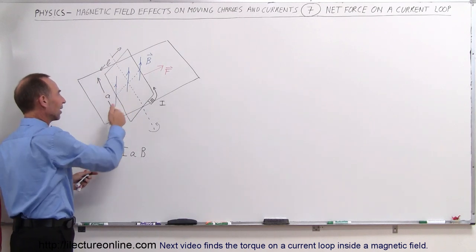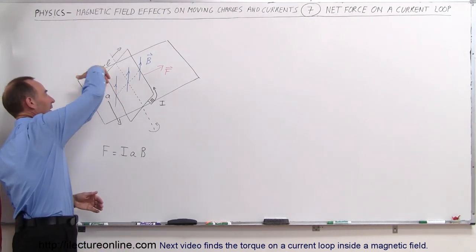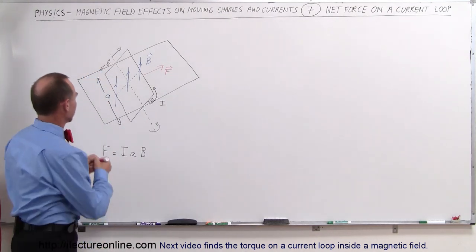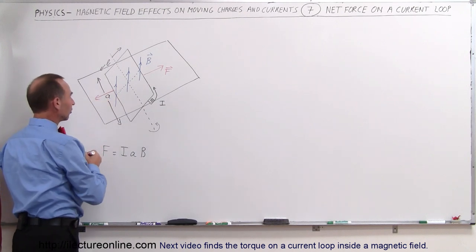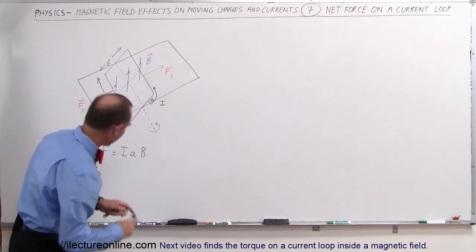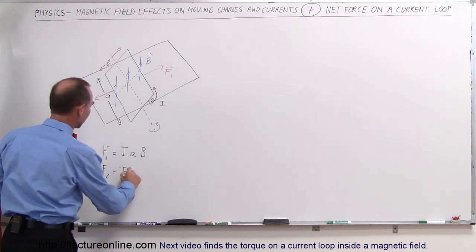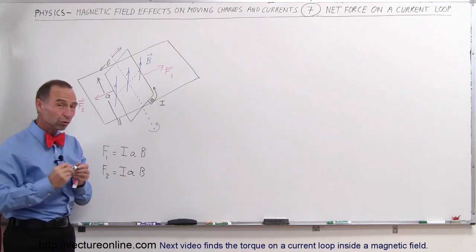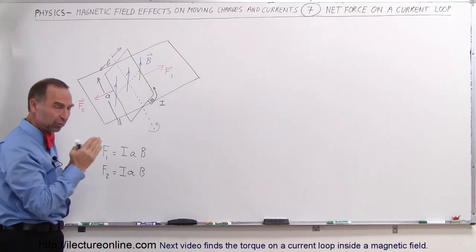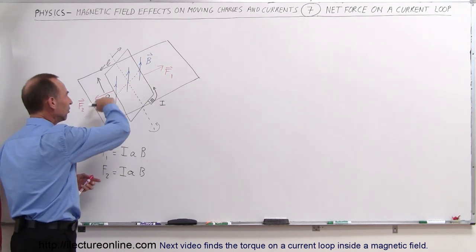How about over here on this side of the loop, which is below the plane? The current is going in this direction and the B field is off the plane, so the force would be in this direction. Let's call this F1 and this F2. The magnitude of F2 would also be the current I times the length A times B. Notice that those two forces are in opposite directions — they do cause a torque, but from a force perspective they're equal and opposite, so F1 cancels out F2 and there's no net force in this direction.